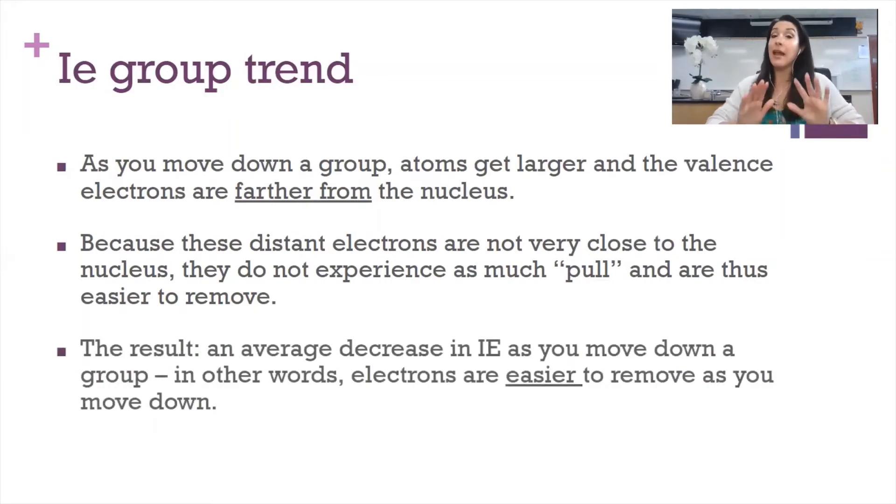So the result is, on average, a decrease in ionization energy as you move down a group, as you move down the periodic table. So in other words, electrons are easier to remove as you move down a group.